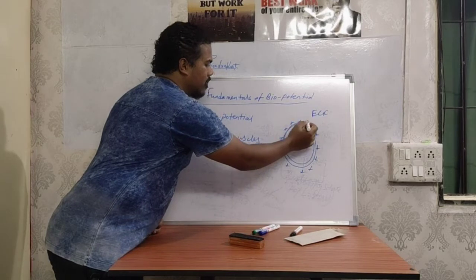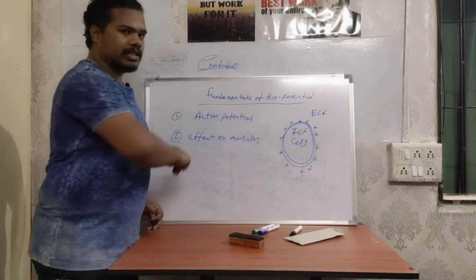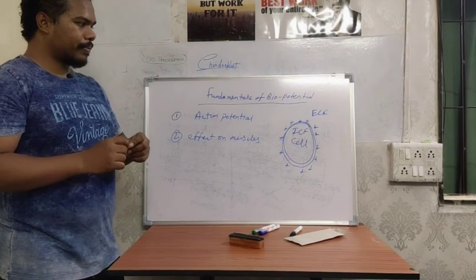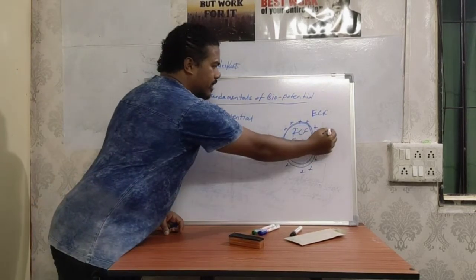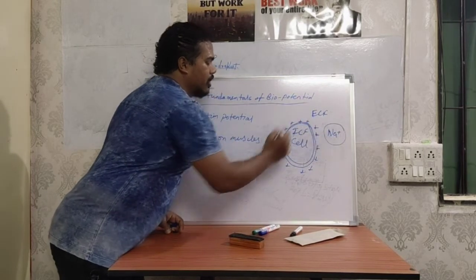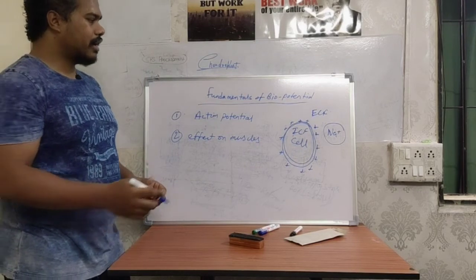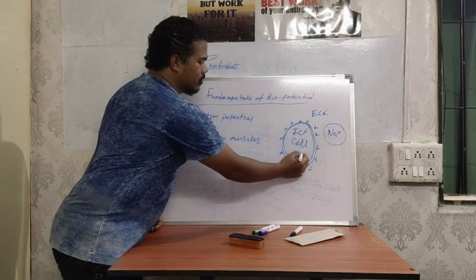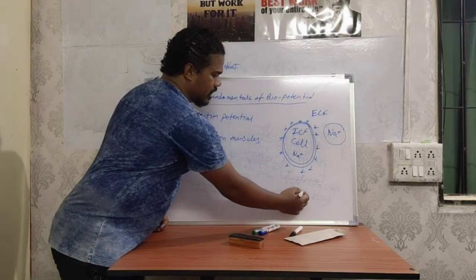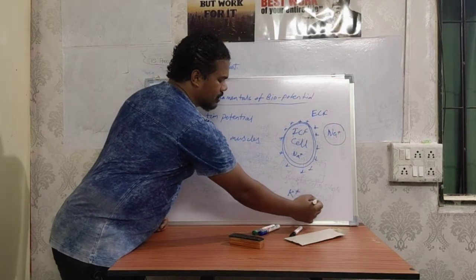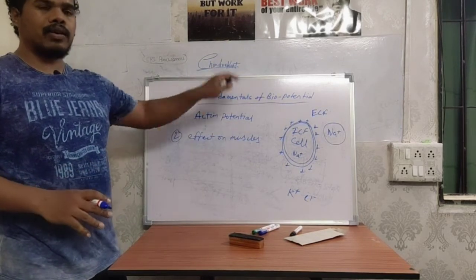There is a potential difference between ICF and ECF. There is an accumulation of positive charge outside and an accumulation of negative charge inside. In your ECF, the ion Na+ is found in abundance. And in your ICF, there is also Na+. Apart from this, K+, Cl-, and many more ions also exist all over the system.